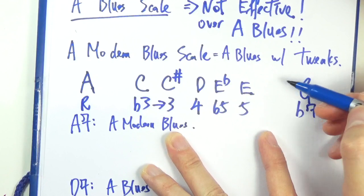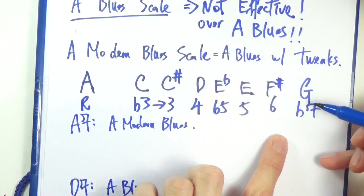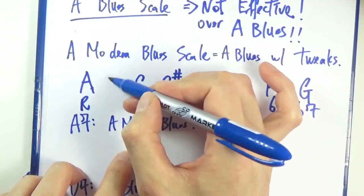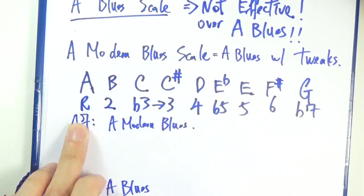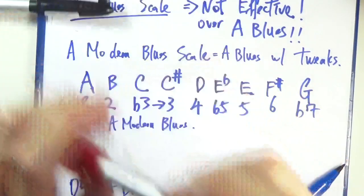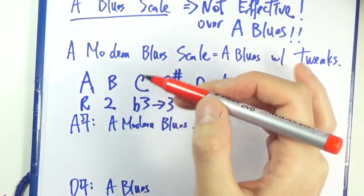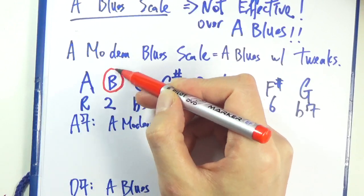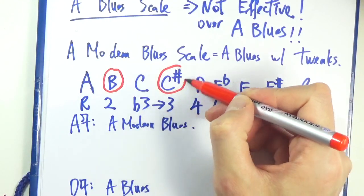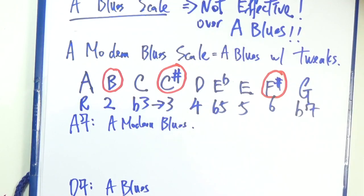We will also add F sharp. So that's major 6 of A. We are at major 6. And finally we are going to add B. So that's the major 2nd of A. So really the modern blues scale is a blues scale with the 9th or the major 2nd, 3rd, and also major 6.